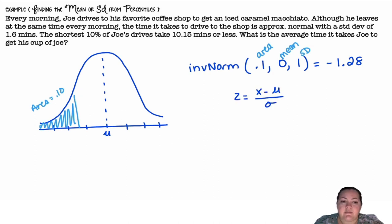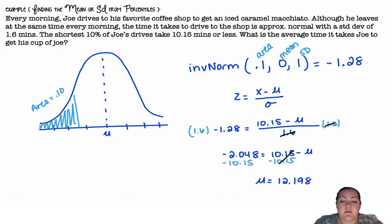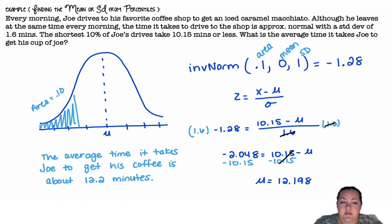So I know that this unstandardized has to have a z score of negative 1.28. I don't know the mean, but I know that the x value is 10.15 and the standard deviation is 1.6. So now I'm going to do some algebra to try to solve and get μ, the mean by itself. So I get negative μ equals negative 12.198. I want positive μ so I just change the sign of everything. The average time it takes Joe to get his coffee is about 12.2 minutes.